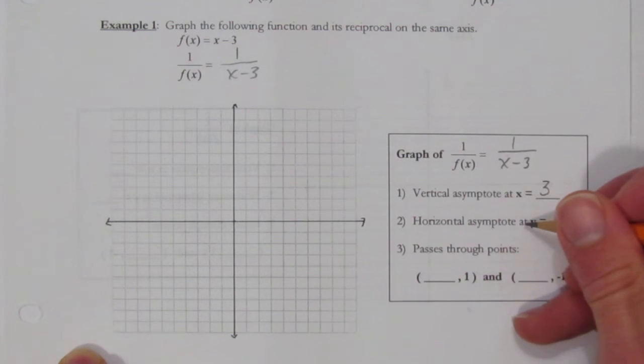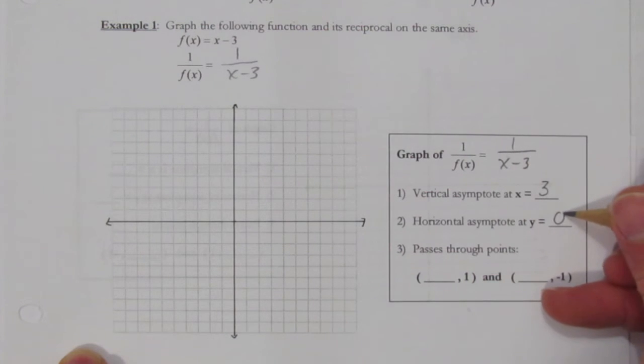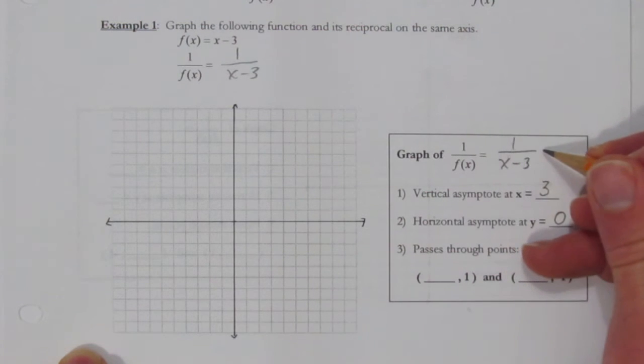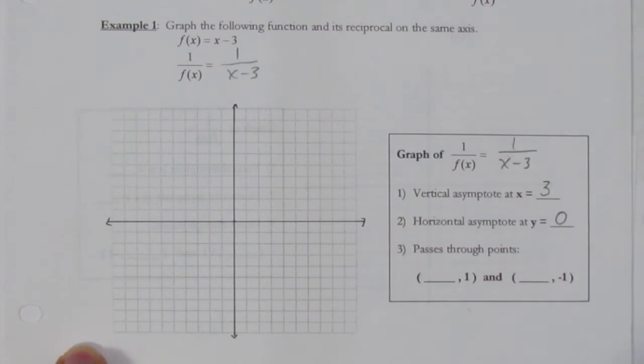There's also a horizontal asymptote for any reciprocal function at y equals 0. That is, 1 over anything, no matter what's in the denominator, as long as it's 1 on top, that reciprocal function will have a horizontal asymptote at y equals 0.